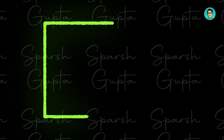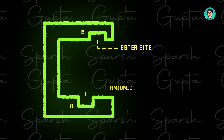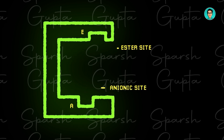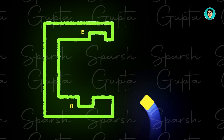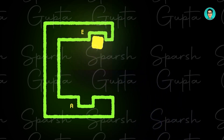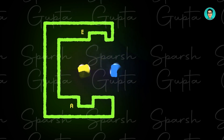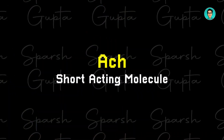This is the presence of the normal acetylcholinesterase enzyme. It has the presence of an ester site and the presence of an anionic site. Now the molecule acetylcholine is going to come in contact with the enzyme and get attached at the acetylcholine site, resulting in hydrolysis of the acetylcholine. This makes acetylcholine an example of a short-acting molecule in the body.